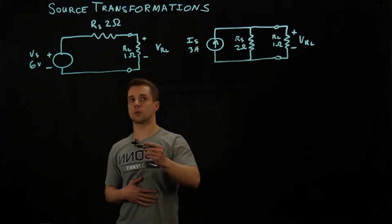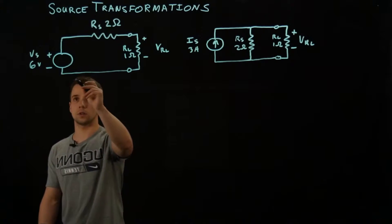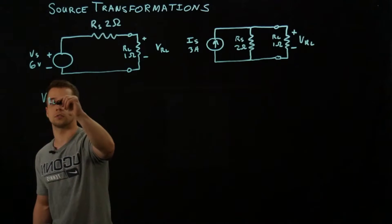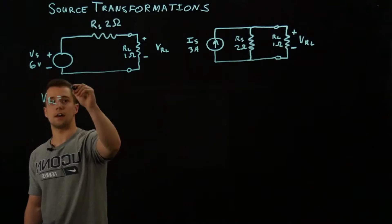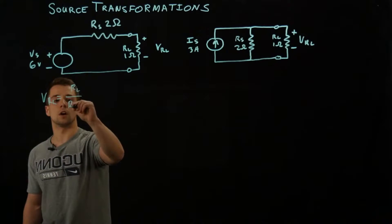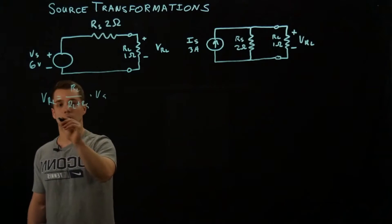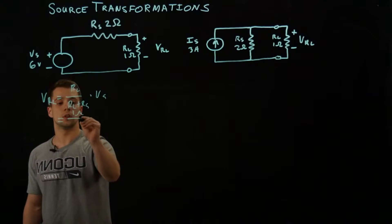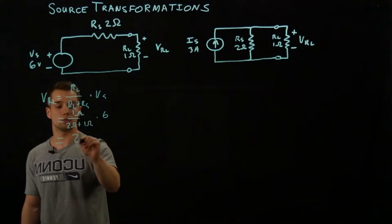So in these two circuits, we're looking for the voltage over this load resistor. For this one, we have a voltage source. The voltage across the load resistor will just be equal to RL over RL plus RS times VS. And that gives us 1 over 2 ohms plus 1 ohm times 6, which gives us 2 volts.